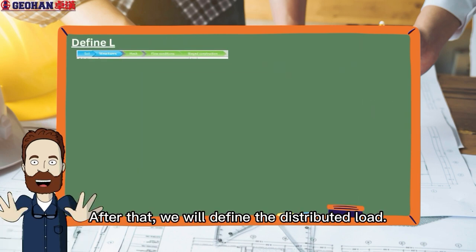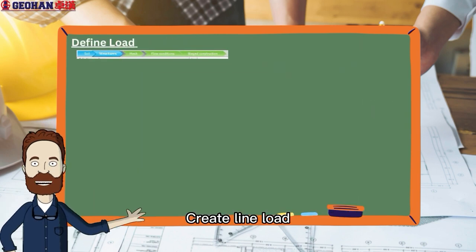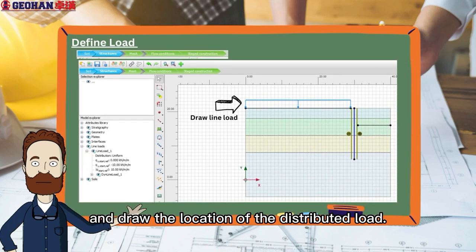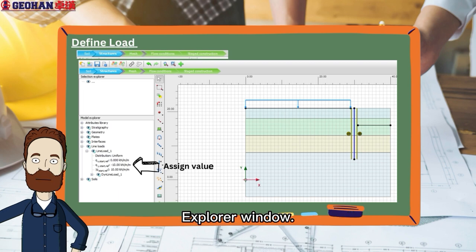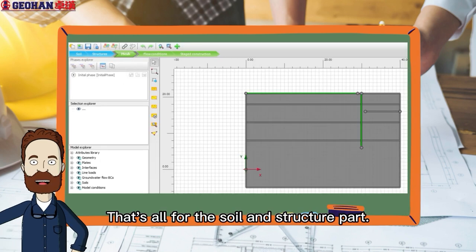After that, we will define the distributed load. Create line load and draw the location of the distributed load. Assign the loading value in the Selection Explorer window. That's all for the soil and structure part.